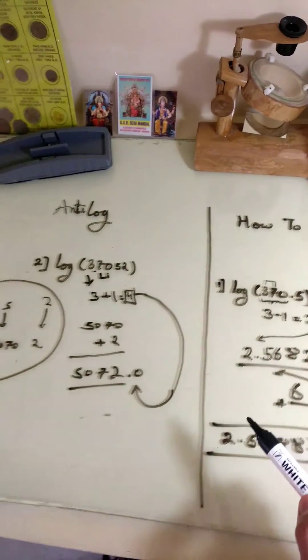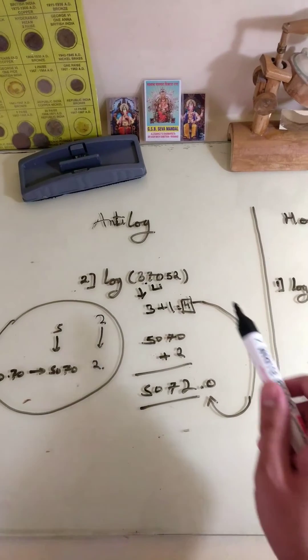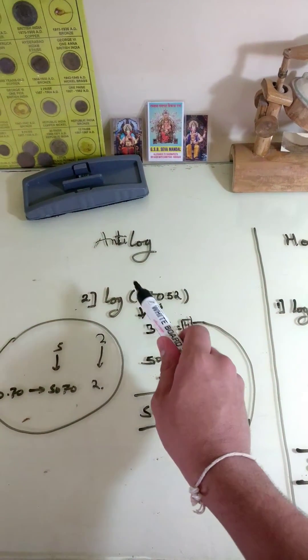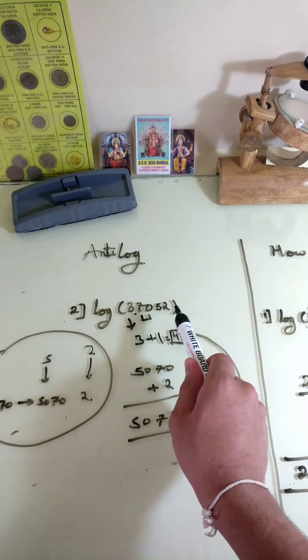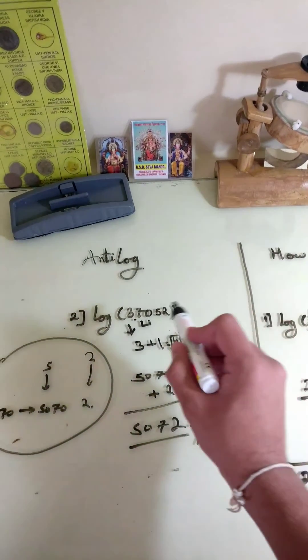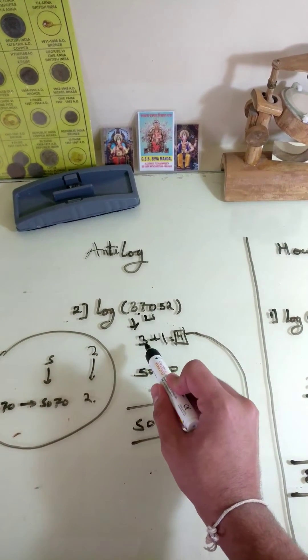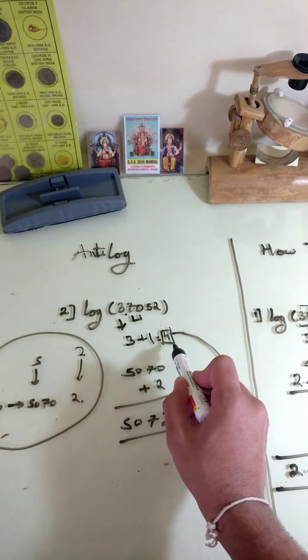Now, we find antilog of 3.7052. Here, we write 3 as it is and add 1 which gives us 4.